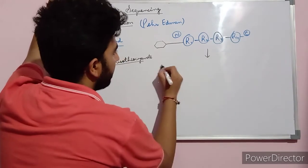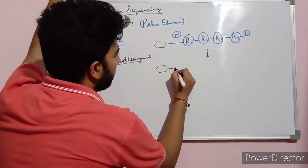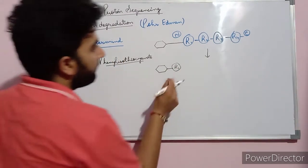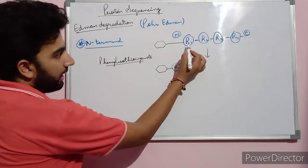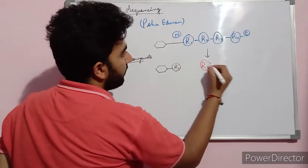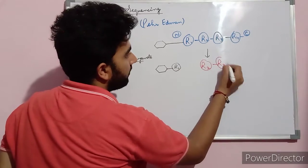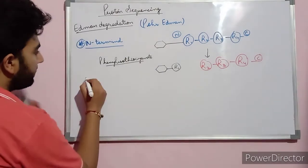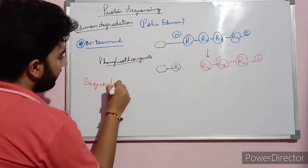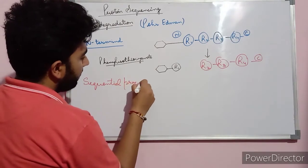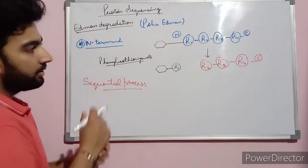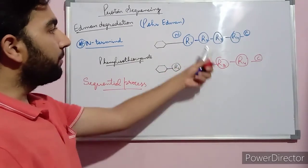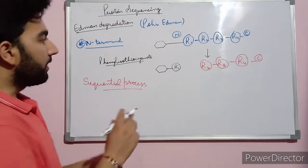In the second step, this phenyl isothiocyanate will combine with the first N-terminal amino acid and the rest of the amino acids will remain the same. This is also known as the sequential process, meaning the removal of the amino group or the determination of the amino group from the polypeptide chain occurs one by one.